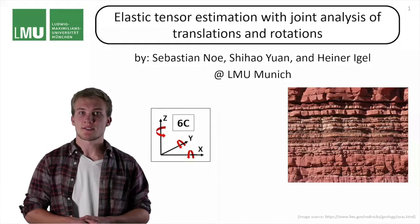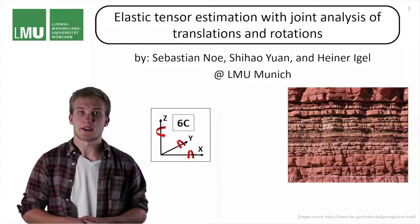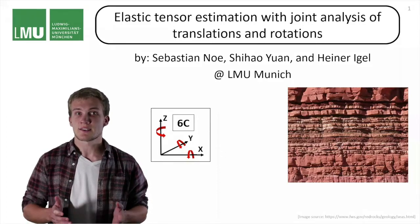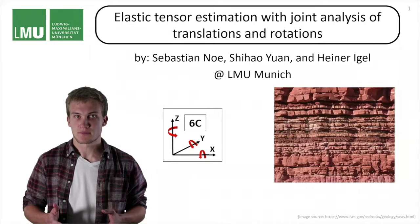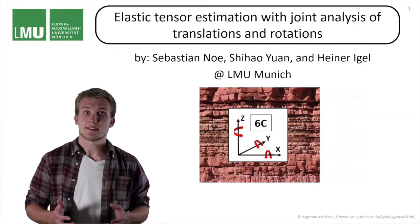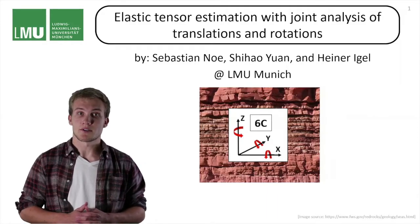Me and my colleagues Shihao Yan and Heiner Eagle have worked on six component receivers. Those receivers simultaneously capture three-dimensional translational and rotational measurements. We have thought about what happens if you put such a receiver inside an anisotropic medium. We have found out that it is possible to invert for the entire elastic tensor by using just a single six component borehole receiver.